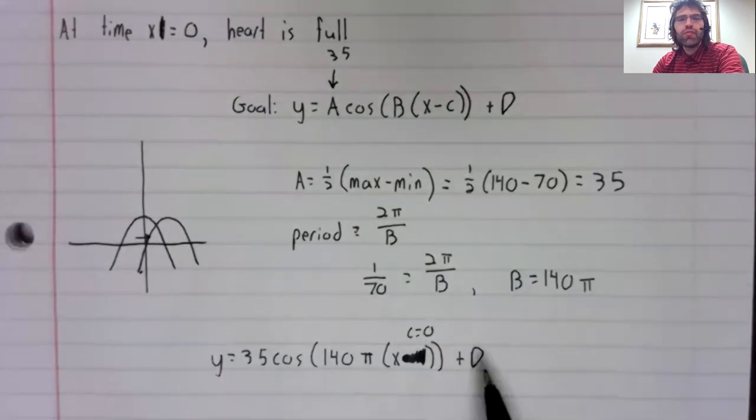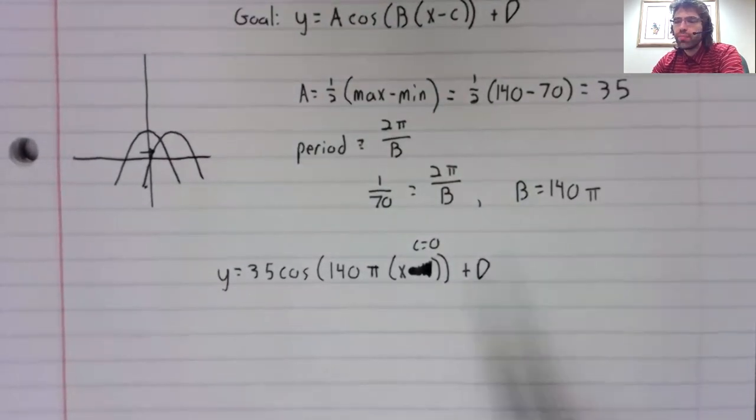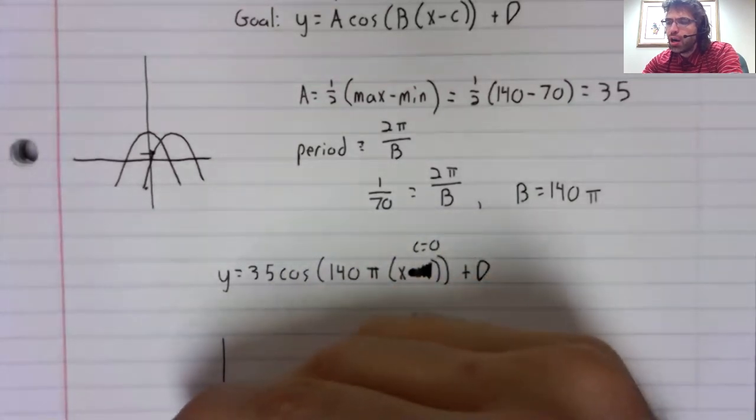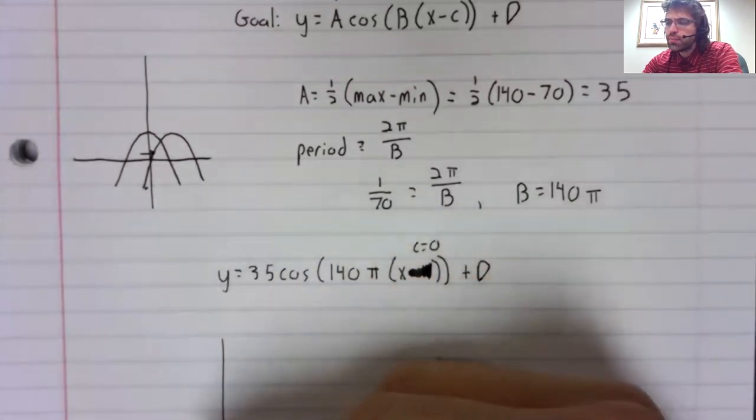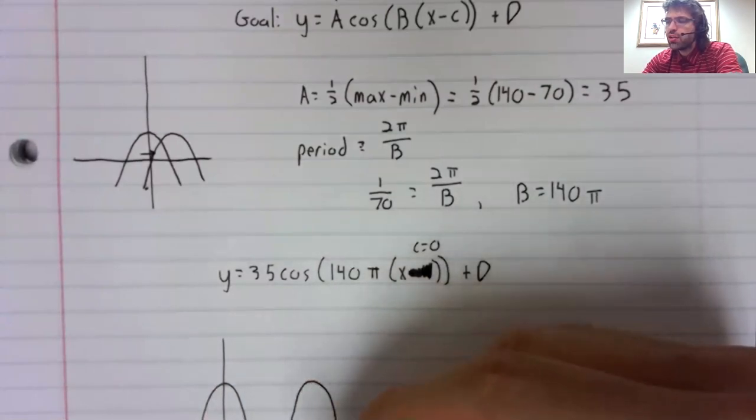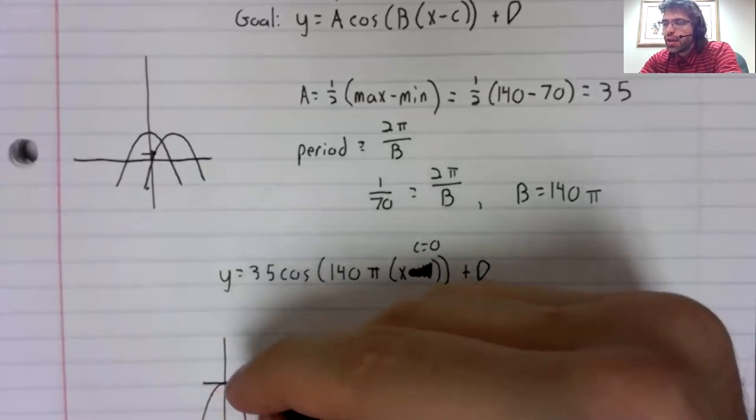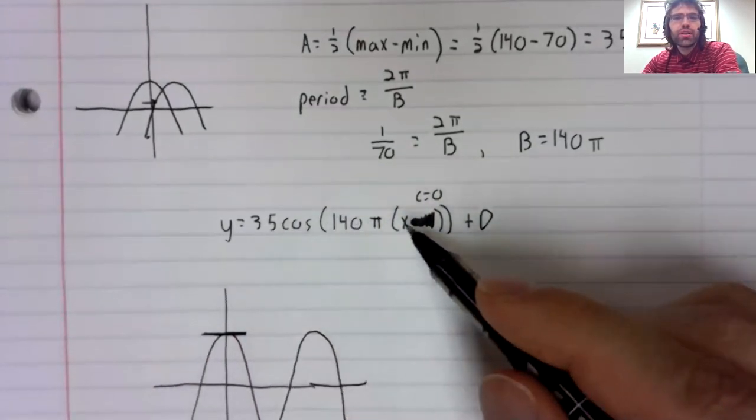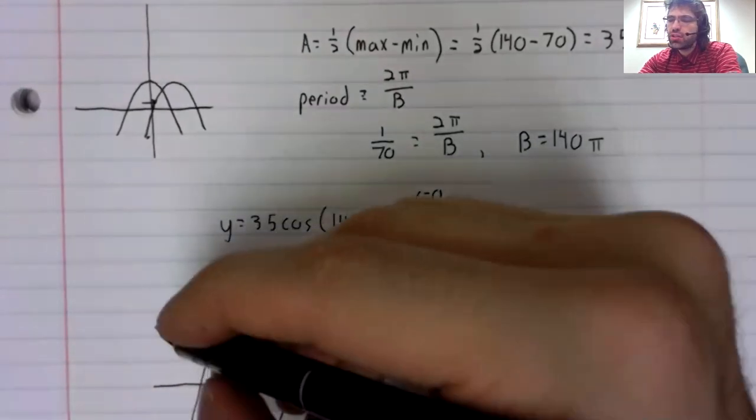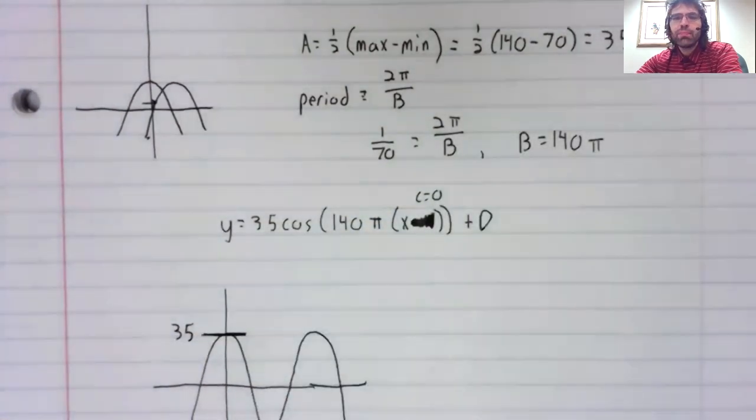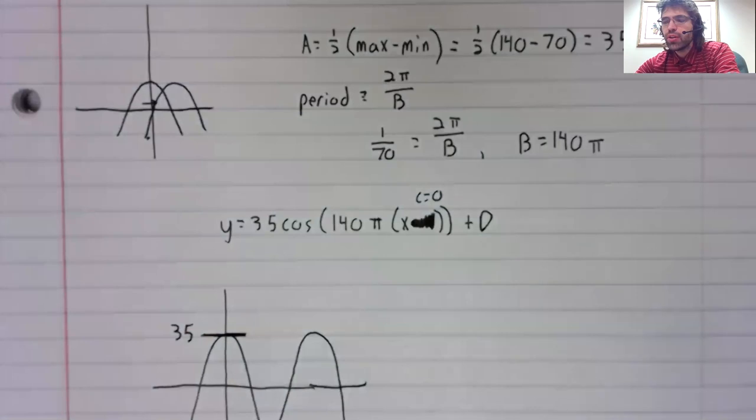What about the vertical shift? Well, what we have so far is something that looks like this. And the maximum value that this function takes on is the amplitude, 35.